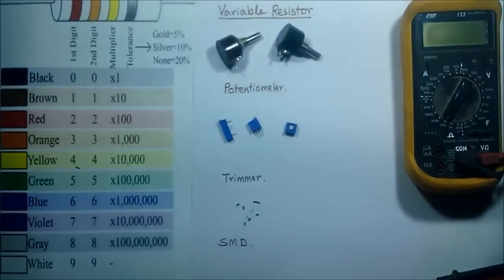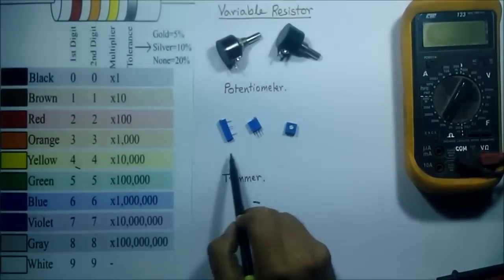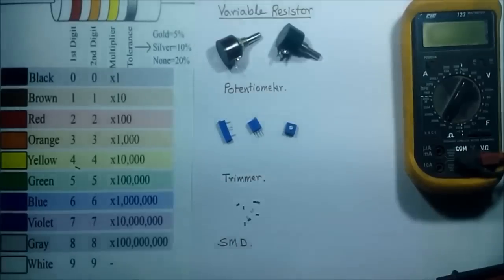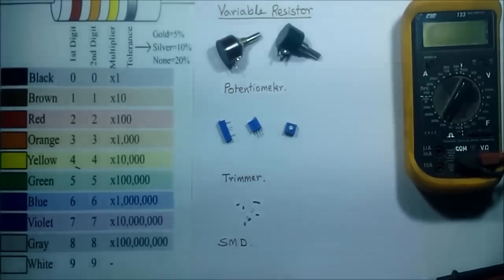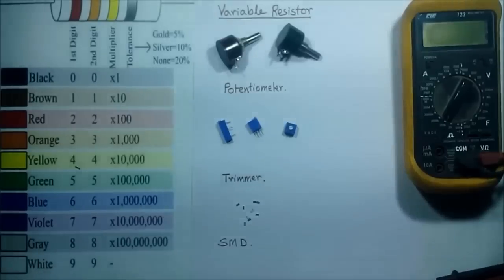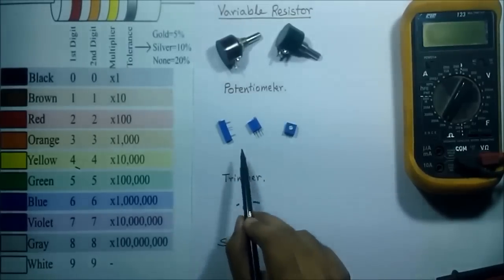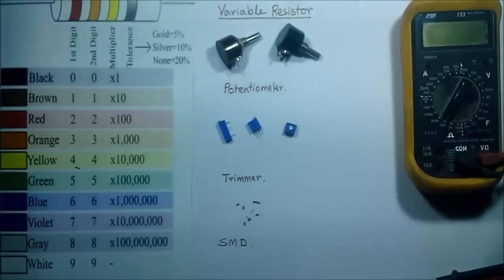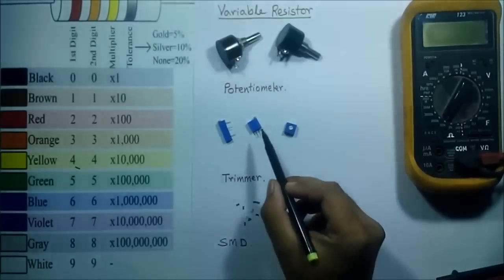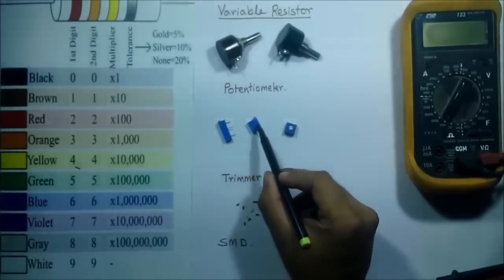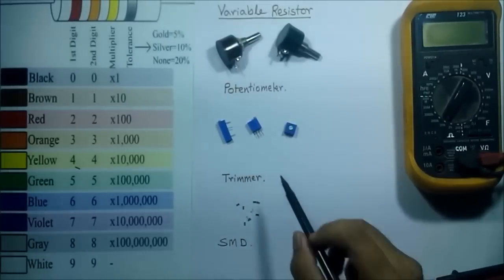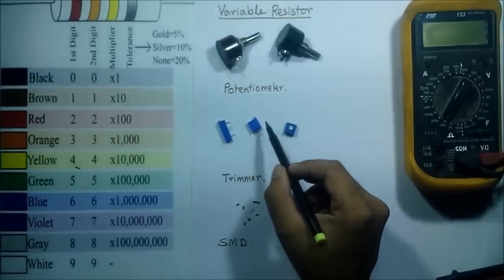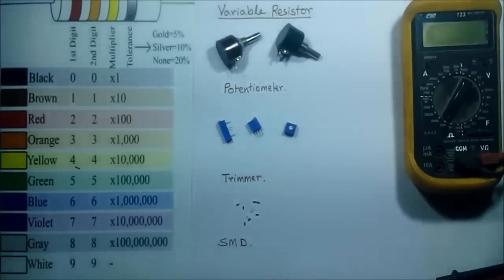Next come to trimmer resistors. These are all trimmer resistors — they are also variable resistors used for lower wattage purposes. Trimmers are widely used in electronic circuits. Most of the time the wattage rating of a trimmer is below 1 watt. We can find the wattage of a trimmer by using the code written on its body, downloading the datasheet.